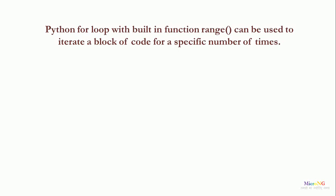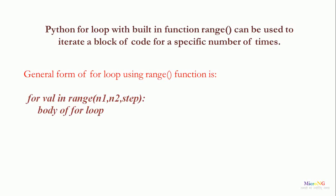The Python for loop with the built-in function range can be used to iterate a block of code for a specific number of times. The general form starts with the keyword for, followed by an index variable such as val, followed by the keyword in, followed by the range built-in function. The range function can take up to three parameters n1, n2, and step, where n1 and step are optional, followed by a colon and the body of the for loop, which should be indented.